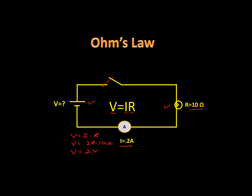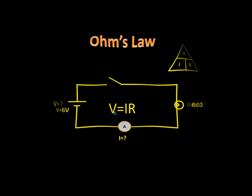So we know the voltage in this circuit is 2 volts — that must be a 2-volt cell. We used the equation V equals I times R to calculate the voltage in this simple electric circuit. Let's look at a different problem.